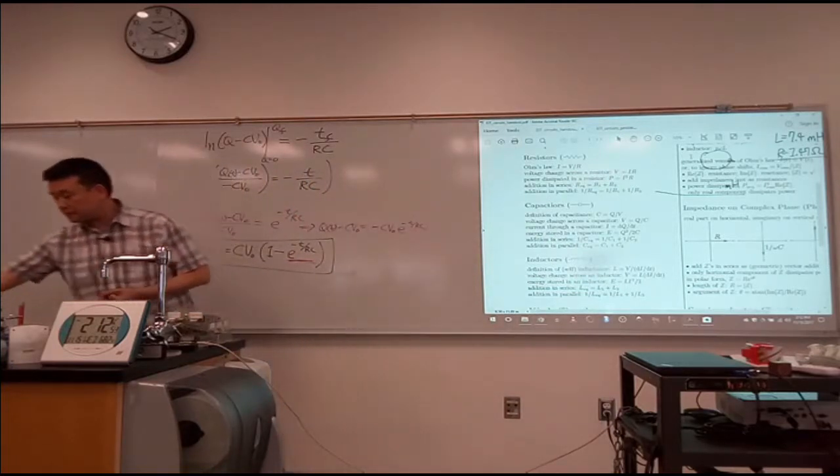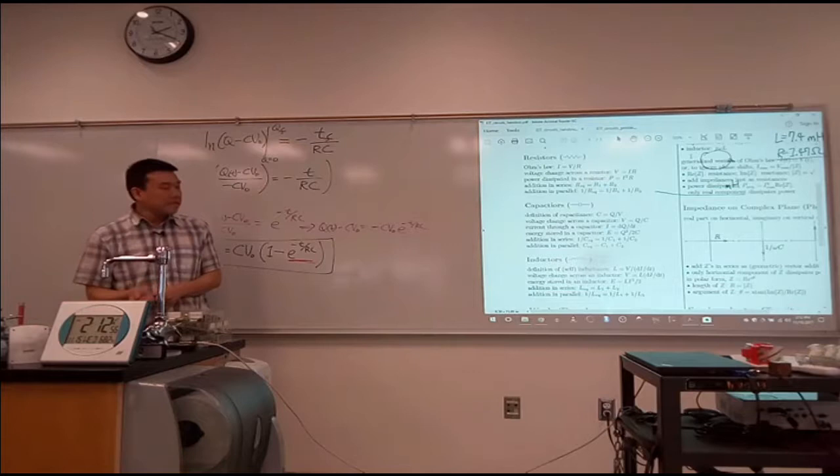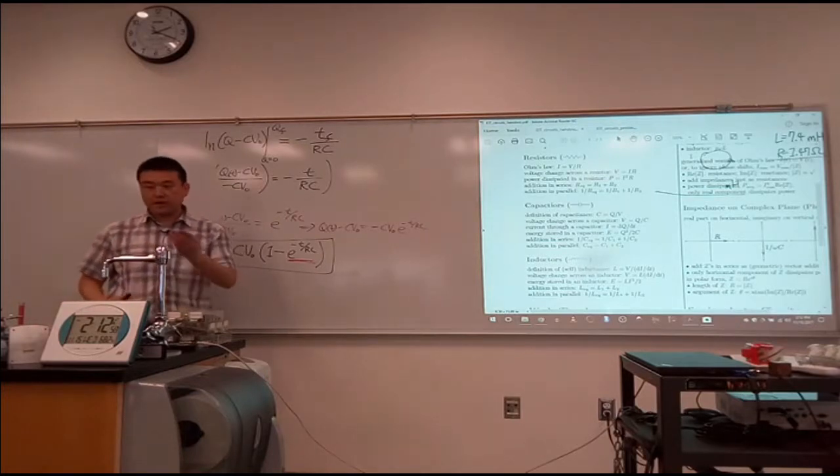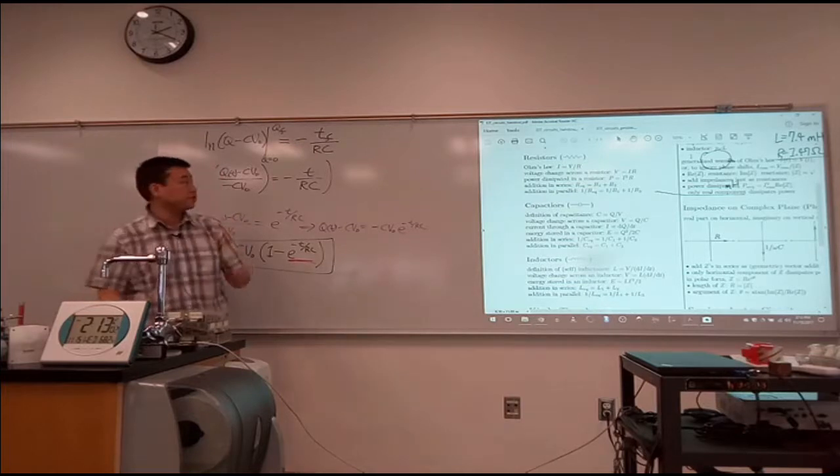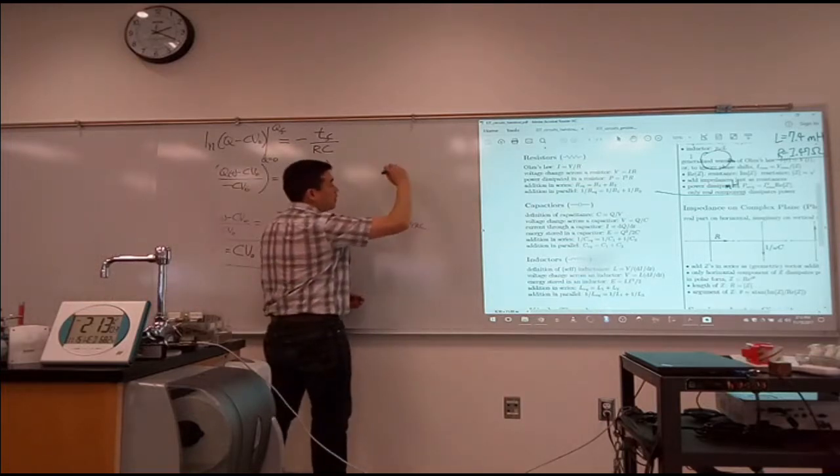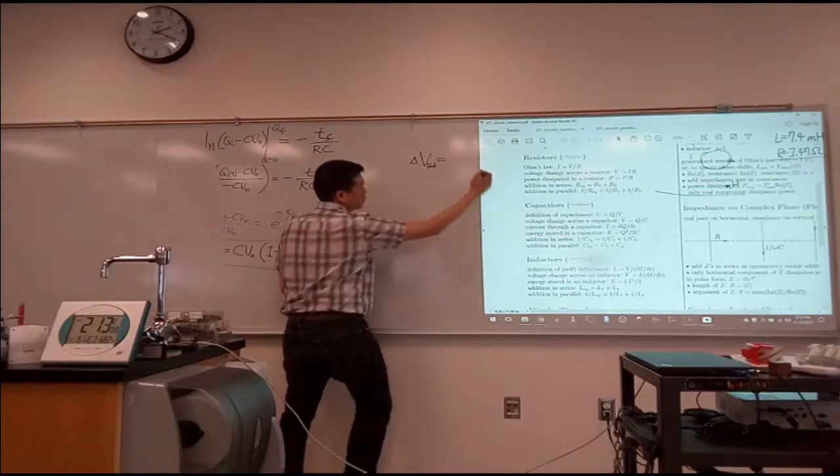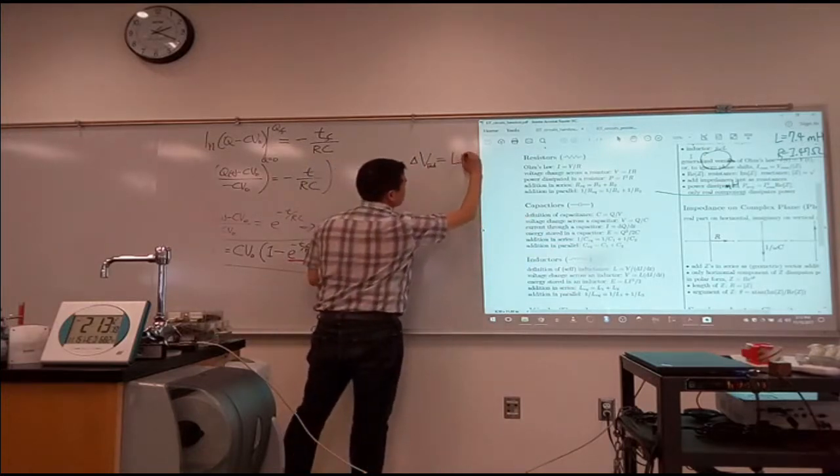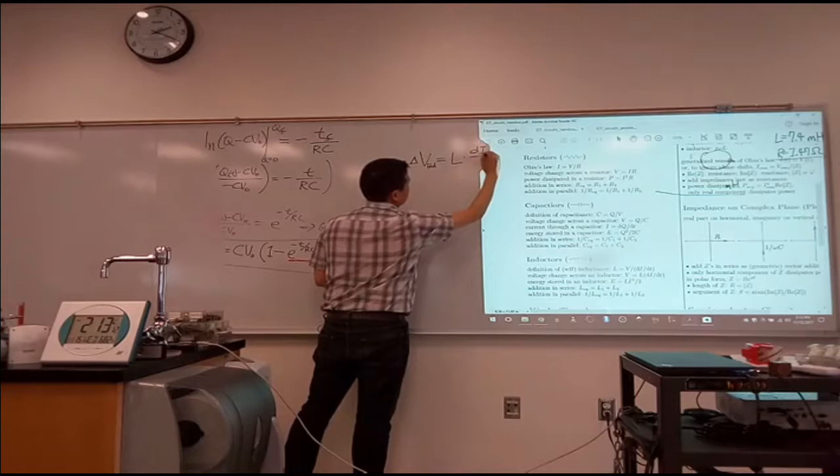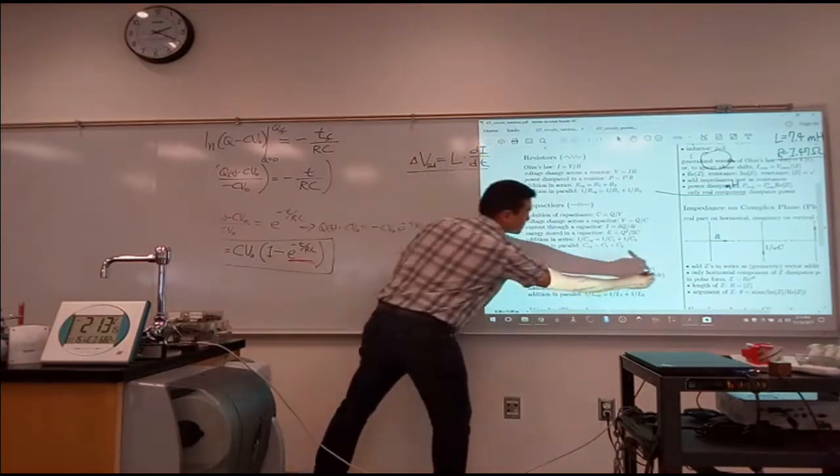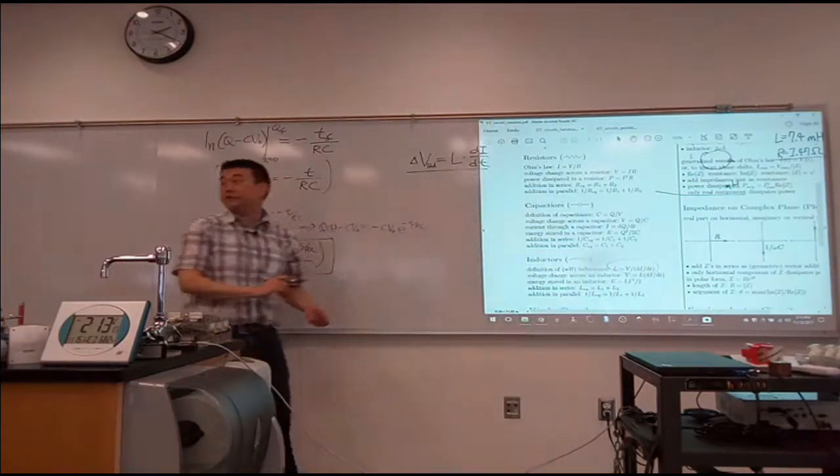So I think the equation I consider when I try to understand the qualitative behavior of inductor is this, that the voltage change across the inductor is equal to inductance L times di/dt. I mean, I'm just taking this same expression here, solving it for V.